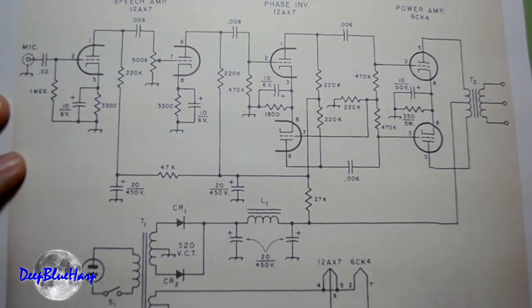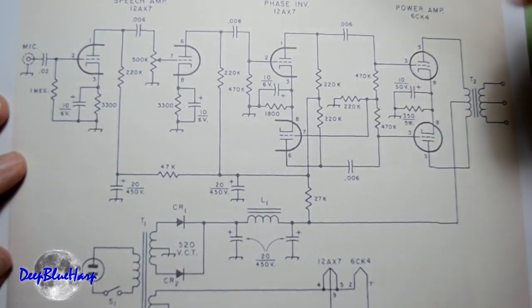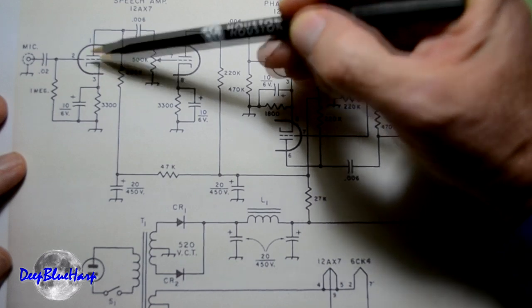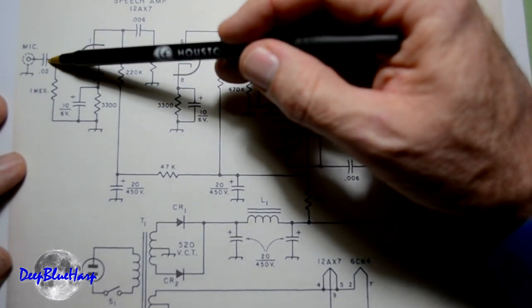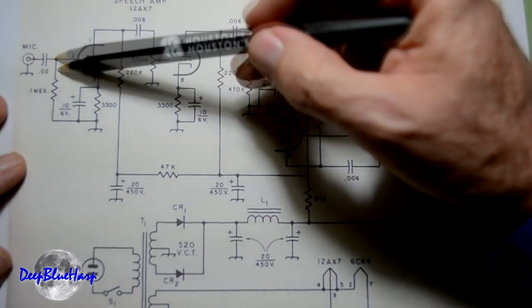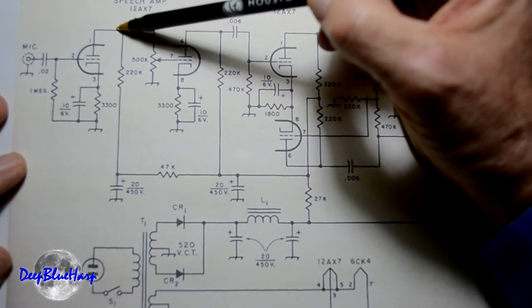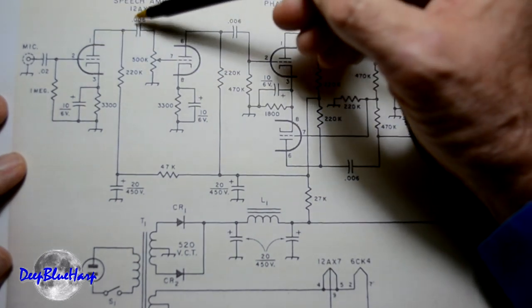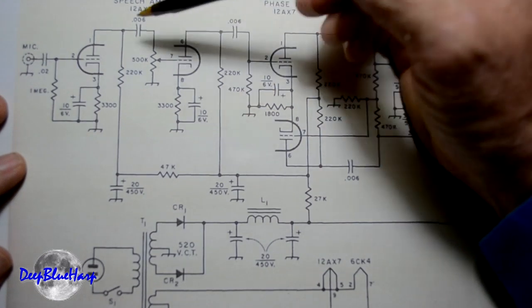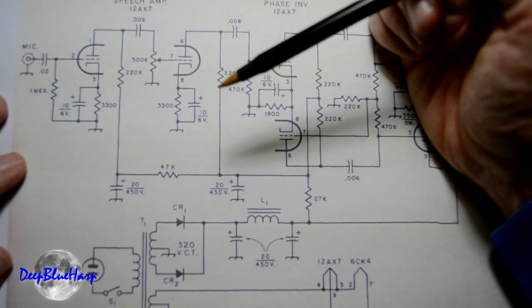So what we have on this circuit is, for a basic PA, the first preamp stage. The mic goes through a capacitor, 0.02 microfarad, to the grid. As the signal goes in and comes into the grid, it controls what is coming out of the plate. This is a 0.006 microfarad. Why? Because this is very clean. A 0.02 fattens it up for us, especially if we are playing blues.